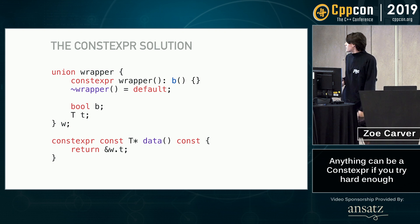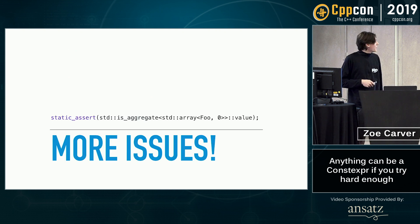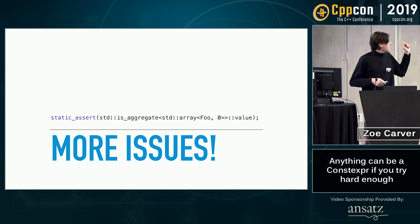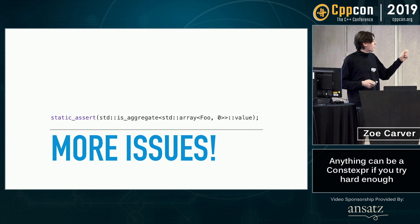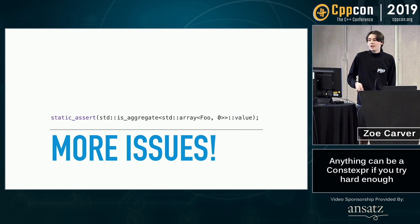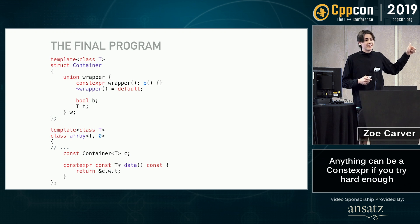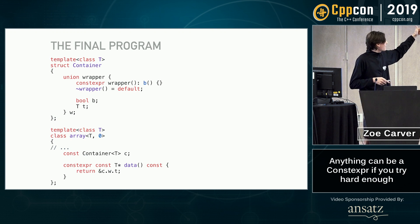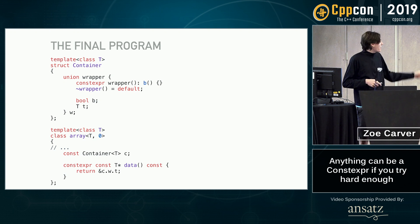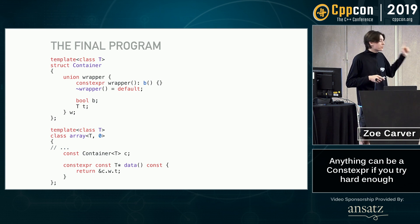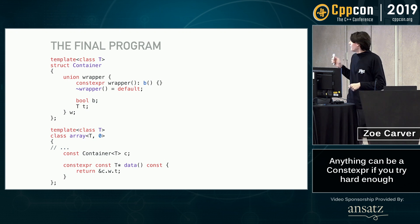So here's the constexpr solution. Except there are more issues, because std::array needs to be an aggregate type and it's not an aggregate type as-is. So how do we fix this? The solution, again, is pretty simple. We just wrap it in another container: we have a struct container, we have a union inside of that, and then in std::array we create a constant member of type container. We just return container.wrapper.t and a reference to that. And this works.